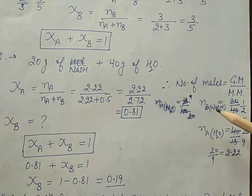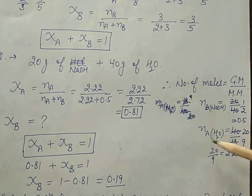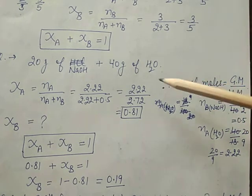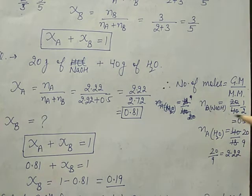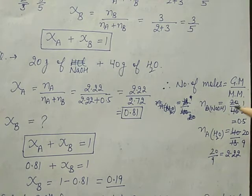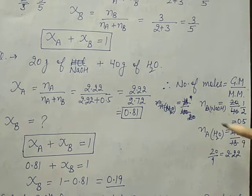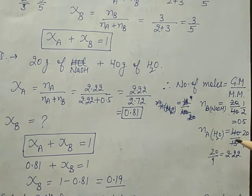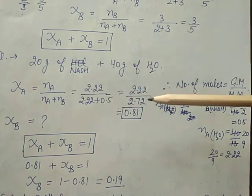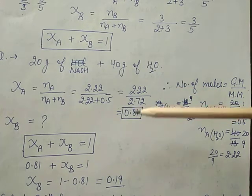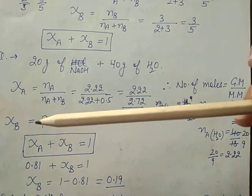Let nB be the number of moles of solute NaOH and nA for solvent H2O. Given mass of NaOH is 20 g; molar mass: sodium 23 + oxygen 16 + hydrogen 1 = 40. So moles of NaOH = 20/40 = 0.5. For H2O: given mass is 40 g, molecular mass is 18, so moles = 40/18 = 2.22. Zeta A = 2.22 divided by total moles (0.5 + 2.22), and the answer is 0.81.